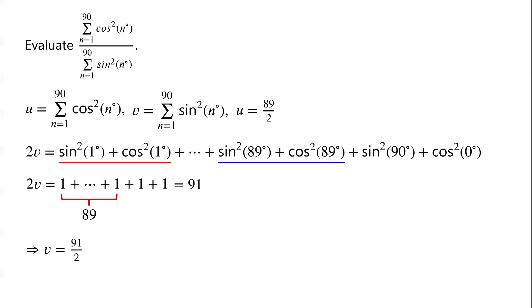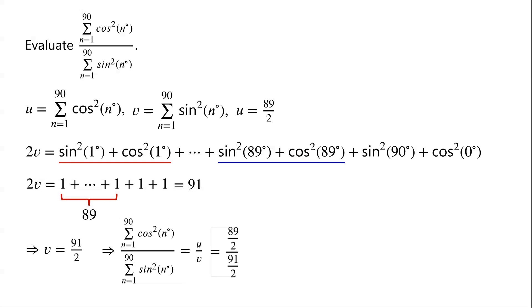So the given trigonometric expression equals u over v, which is (89 over 2) divided by (91 over 2), which is just equal to 89 over 91.